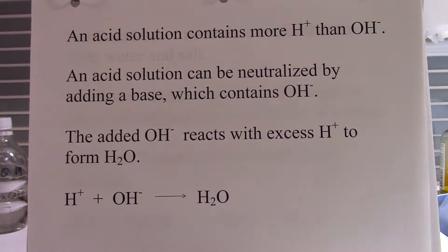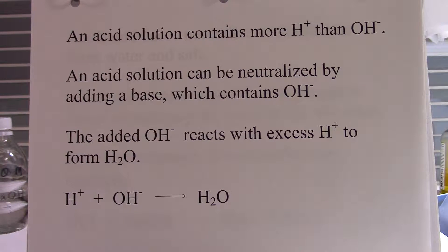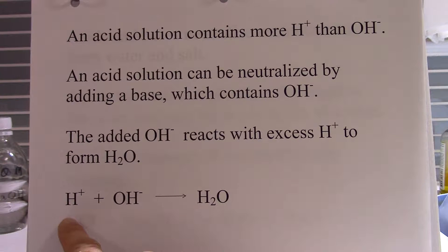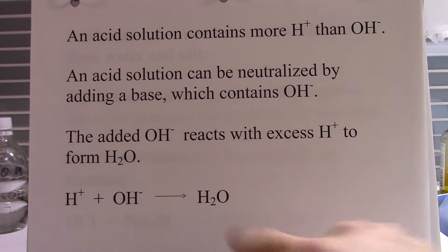An acid solution contains more hydrogen ion than hydroxide ion. An acid solution can be neutralized by adding a base which contains hydroxide. The added hydroxide reacts with excess hydrogen ion to form H2O. So here's the excess hydrogen ion — you add a base to it, it combines and forms a water molecule.